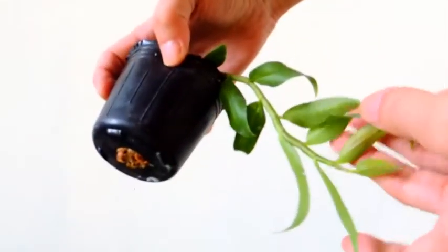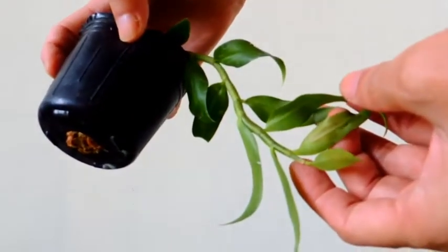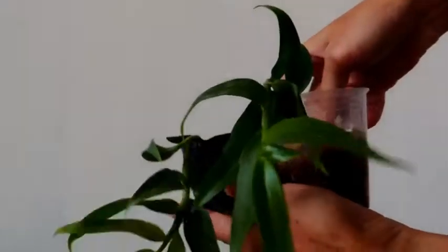We can't see the roots because I used the black pot. Let's check the roots of the other keiki which was potted in a clear pot on the same day. We can see that the new roots have reached the wall of the pot.